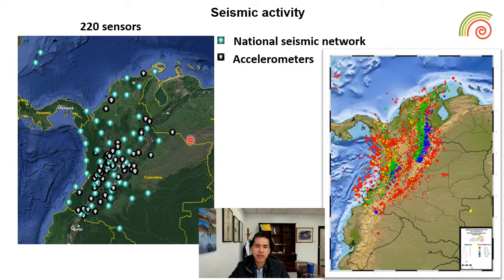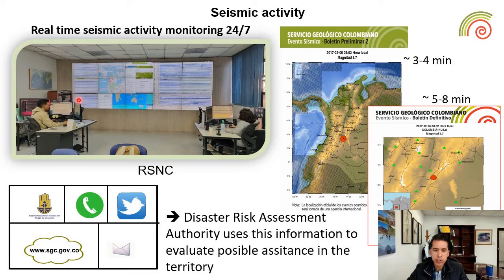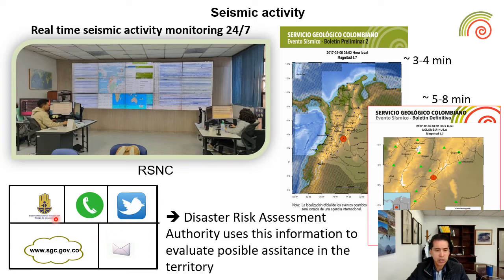With respect to seismic activity, we have a national seismic network with the aim to locate and produce information related to the seismic activity. In real time, we are continuously monitoring the seismic activity of Colombia, and each time an earthquake occurs along the Colombian territory, we have three or four minutes to produce a bulletin to the authorities, such as the risk reduction entity and governments.